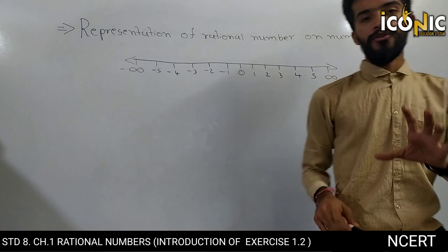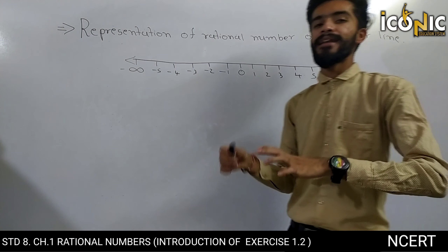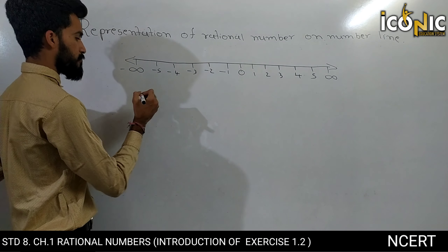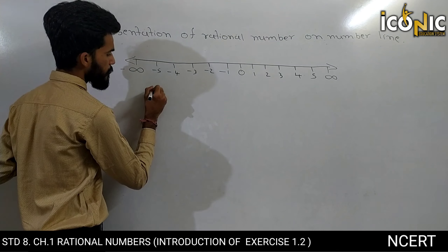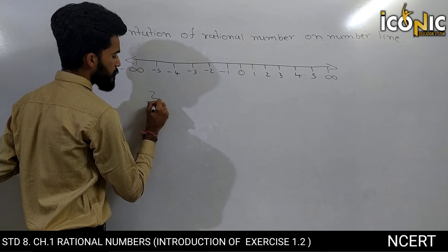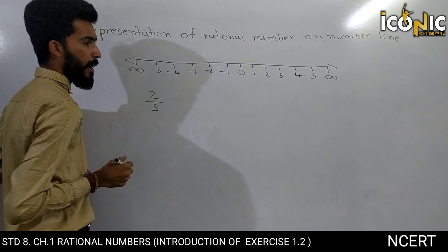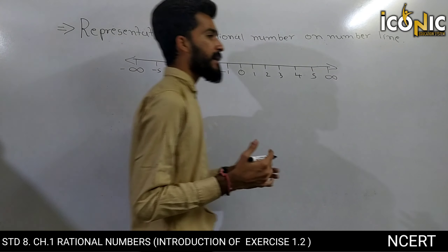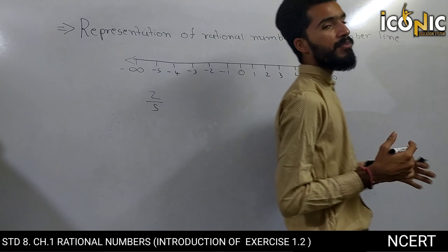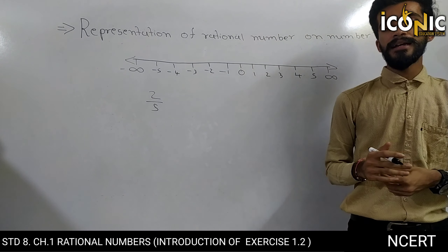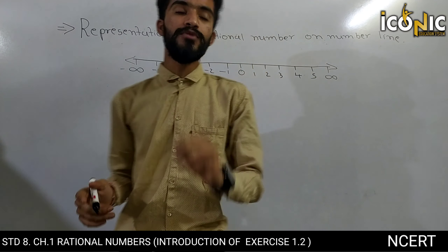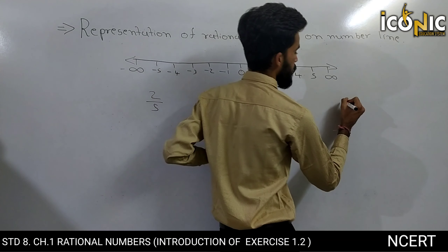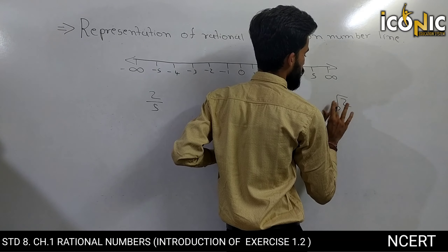Per, agar humhe whole number ki jagah rational number kaha gaya. Okay, suppose I have one number: 2 upon 5. Toh 2 upon 5 kahan par aayega, woh kis number ke beech mein aayega? Toh humhe uske liye sabse pehle kya karna hai? Divide by 5.